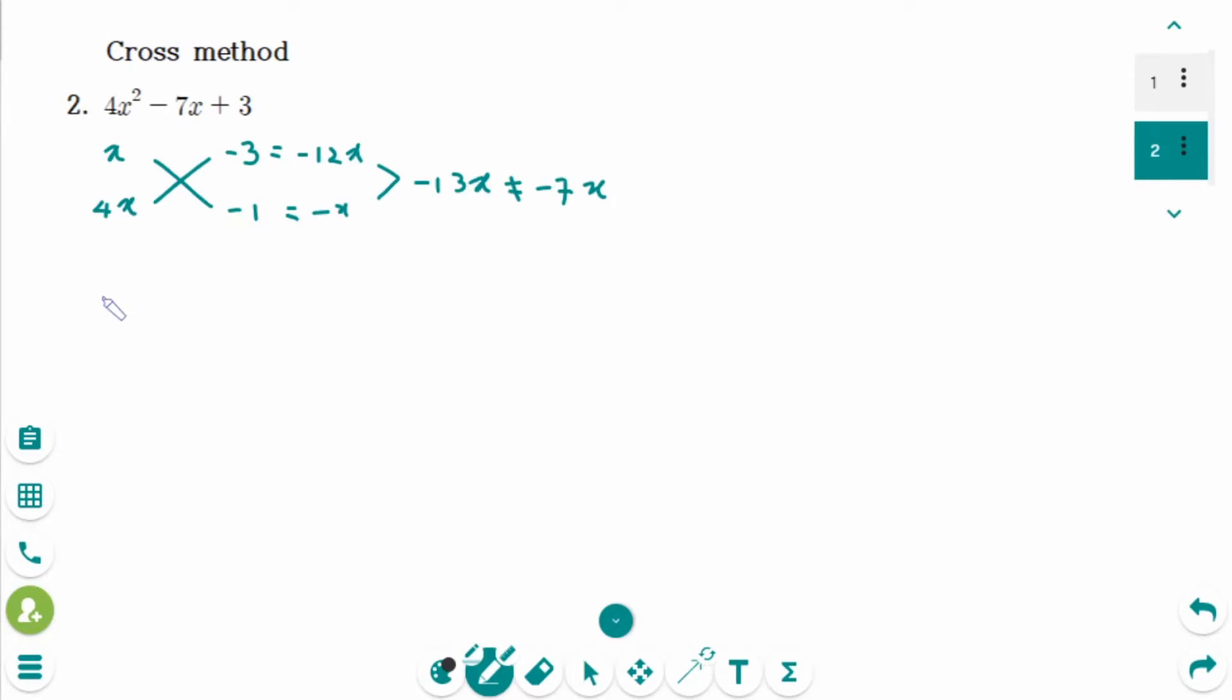Then how about 4x times x make 4x squared. And then minus 3 times minus 1 makes 3. Then cross multiply, so this is minus 3x. That one makes minus 4x. Combine together, minus 7x, which is middle term. So the answer is 4x minus 3 and this way x minus 1. This is factored form.